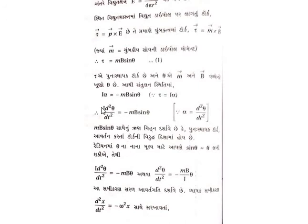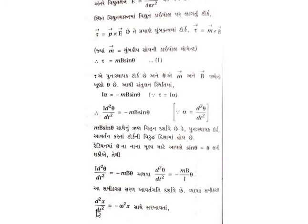So: I · d²θ/dt² equals minus mB · theta (using small angle approximation sin θ ≈ θ). Taking I to the other side: d²θ/dt² equals minus (mB/I) · theta. This is the real mark of our derivation — it matches the SHM equation: d²x/dt² equals minus ω² · x.